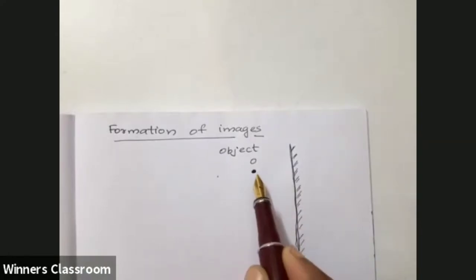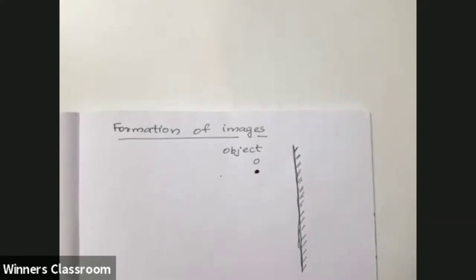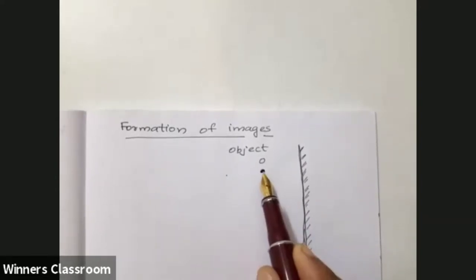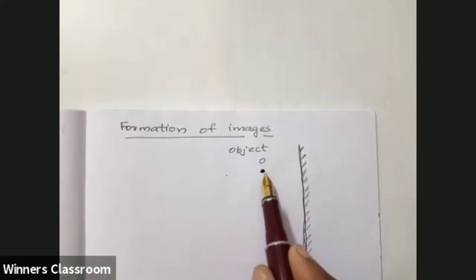We have an incident ray. Actually, the object is not luminous - it is not a luminous object. Light rays fall on the object and are reflected. The object reflects light rays, and you are able to see the object. So light rays are going from here.